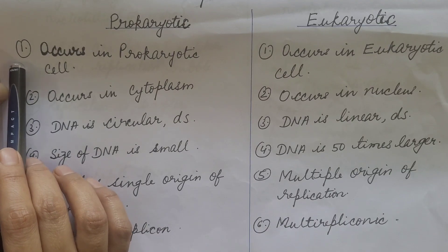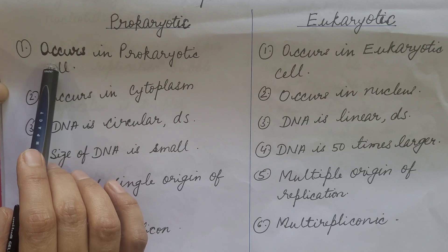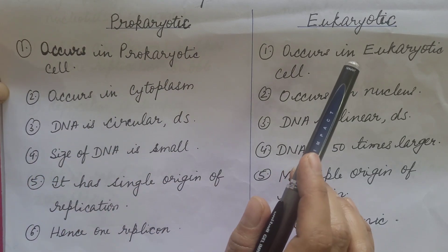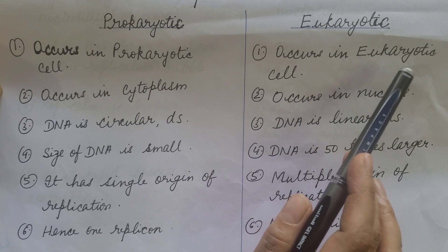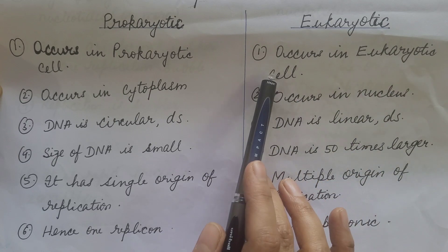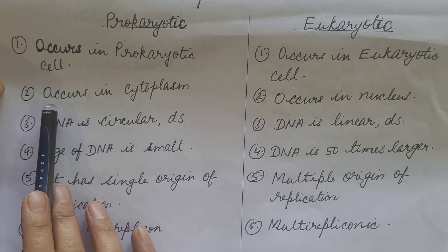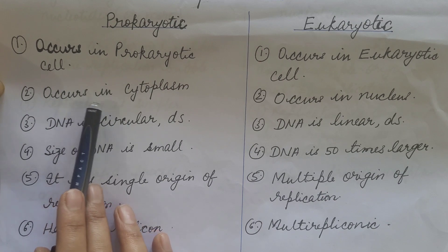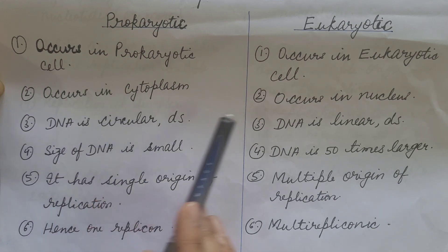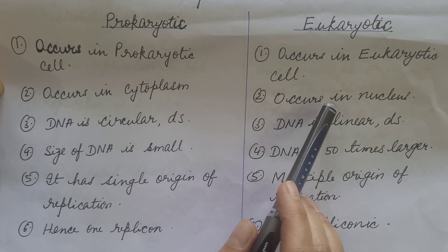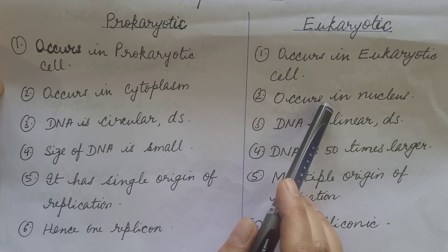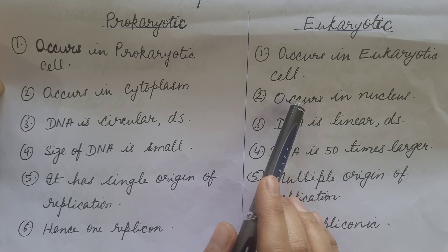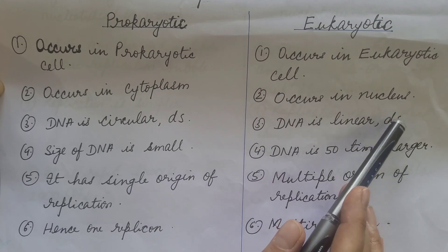First of all, prokaryotic DNA replication occurs in the prokaryotic cell, while eukaryotic DNA replication occurs in the eukaryotic cell. Since prokaryotes do not have a membrane-bound nucleus, replication occurs in the cytoplasm. Eukaryotes have a membrane-bound nucleus which contains chromosomes, and hence eukaryotic DNA replication occurs in the nucleus.